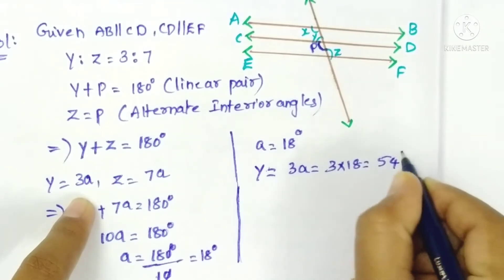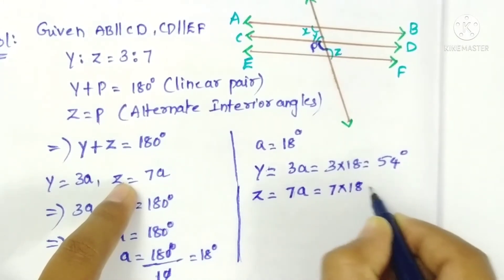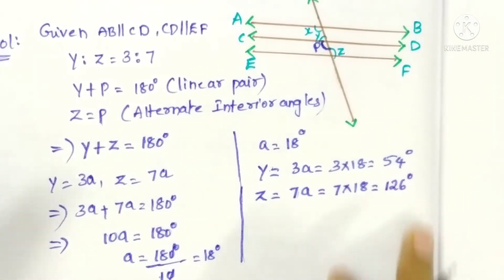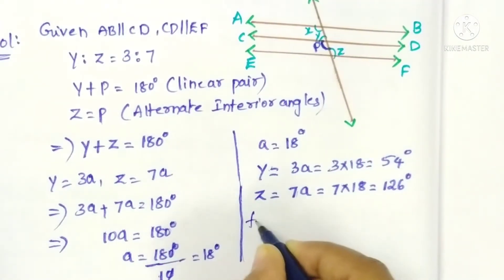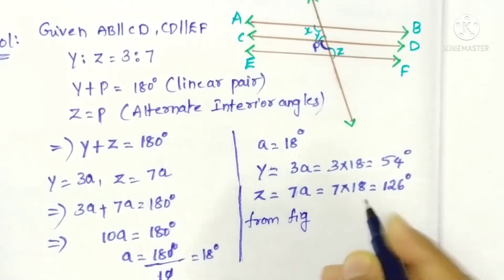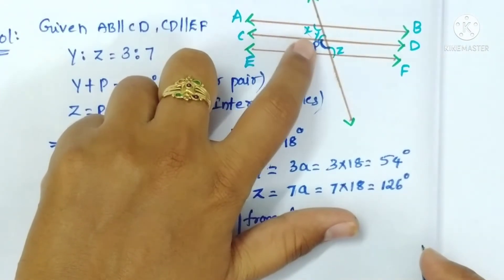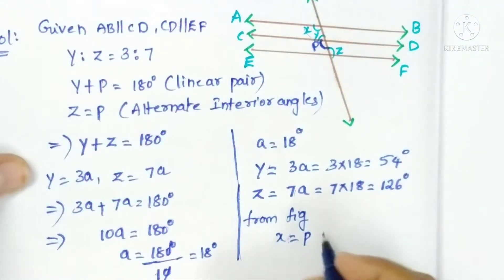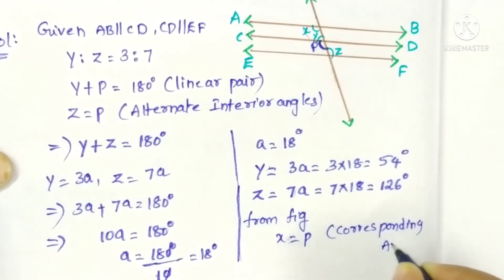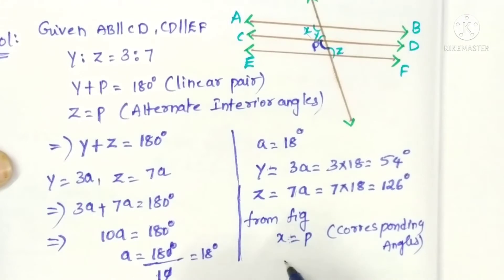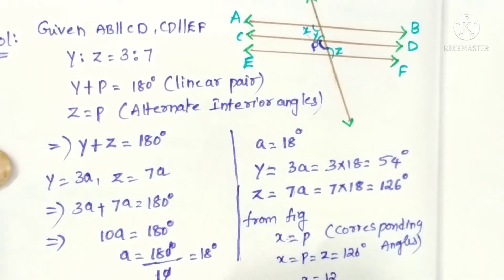Therefore y equals 3a equals 3 times 18, which is 54 degrees, and z equals 7a equals 7 times 18, which is 126 degrees. From the figure, x equals p, and since this x is an interior angle and p is an exterior angle — corresponding angles — and p equals z equals 126 degrees, so x equals 126 degrees.